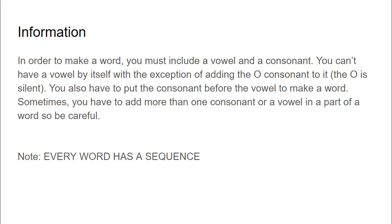In order to make a word, you must include a vowel and a consonant. You cannot have a vowel by itself with the exception of adding the silent vowel consonant to it. You also have to put the consonant before the vowel to make a word. Sometimes you have to add more than one consonant or vowel in part of a word, so be careful.